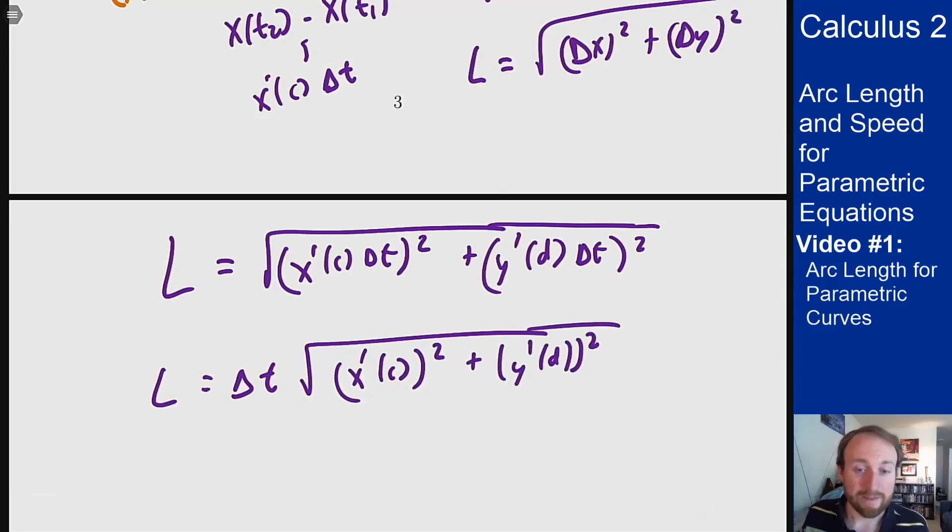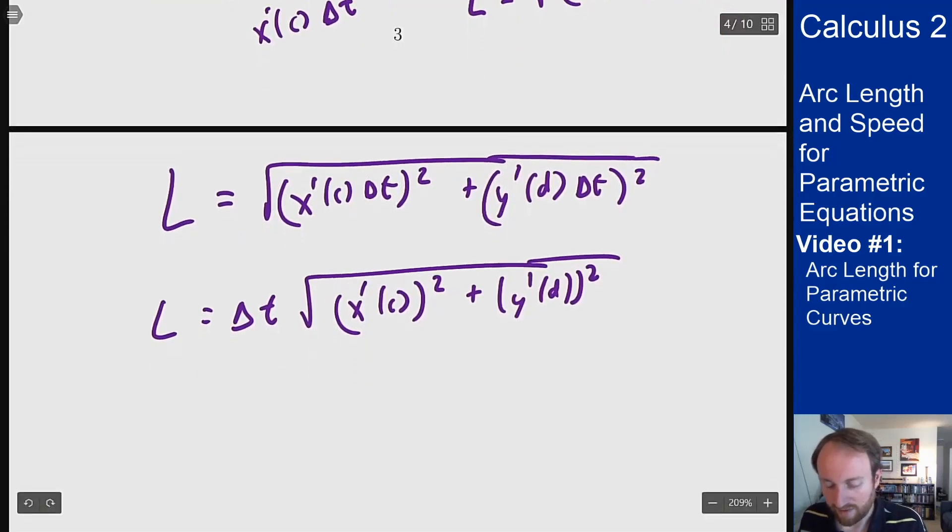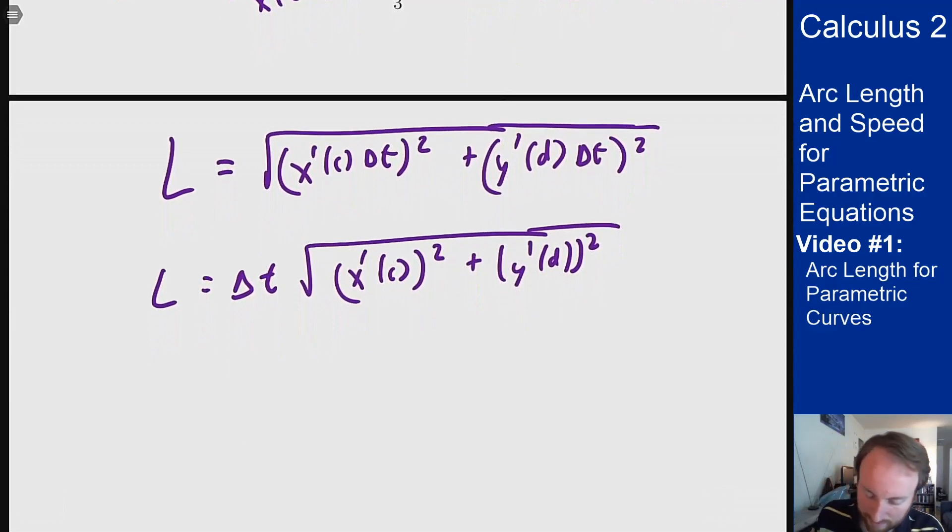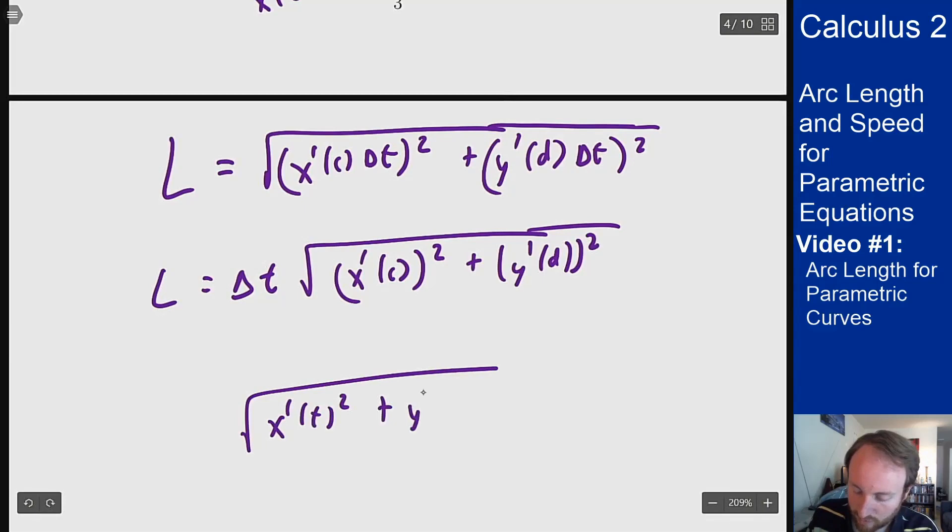And then we want to add these up and then limit as our number of points goes to infinity or as this delta t goes to zero. And just like with our other Riemann sum approximations, the x prime at c and the y prime at d will become the same point when the interval shrinks to zero because they have to be between the two endpoints of the interval. This gives me that my integral should look something like square root of x prime of t squared plus y prime of t squared dt. And that's exactly what we get for the arc length of a curve.